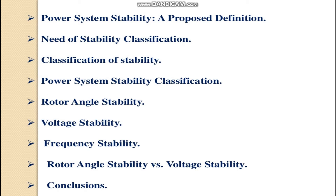Power system stability plays an important role. What is stability? When your system is subjected to disturbances, if the system is able to return to its original steady state condition after getting a disturbance and after some delay, then the system is said to be in a stable position. The different types of stabilities, their definitions, and the importance of stability classification will all be covered.